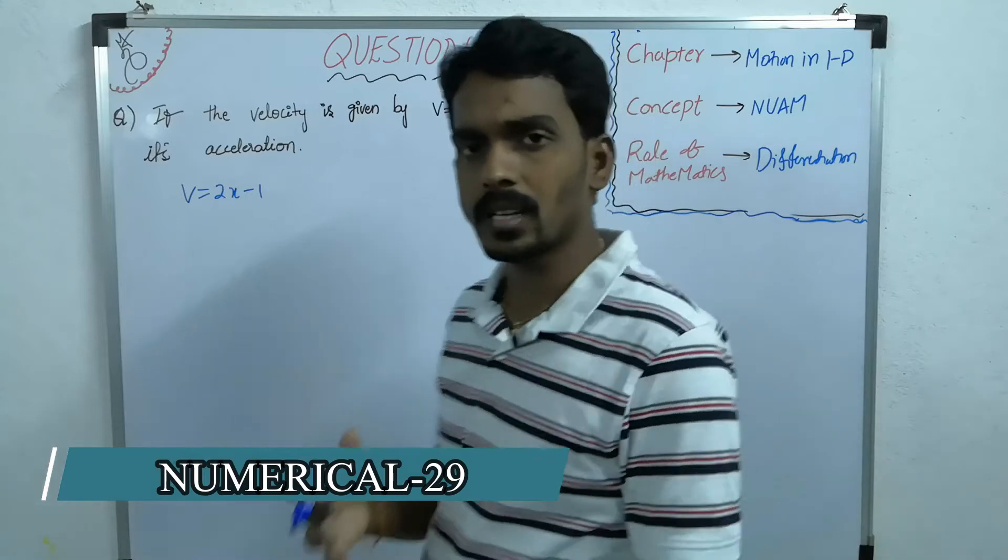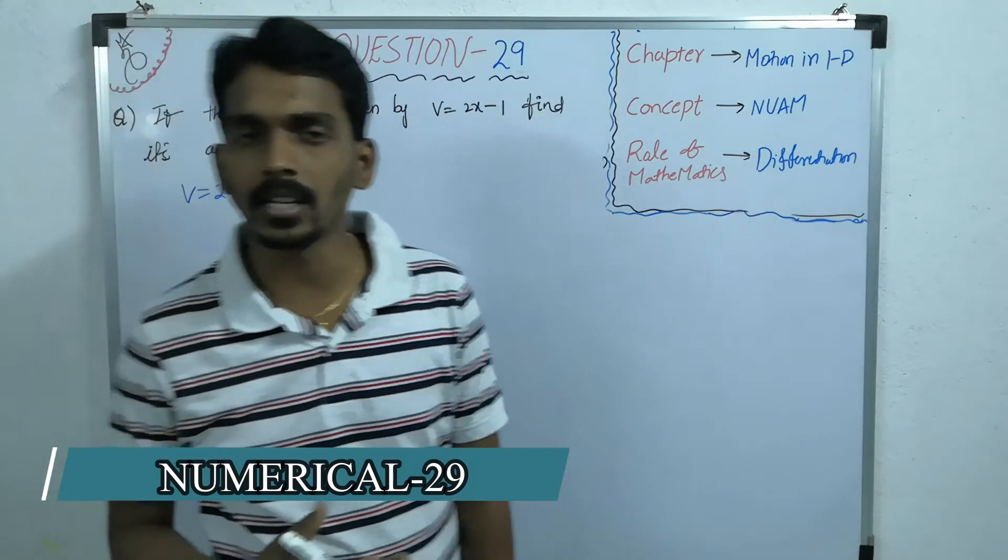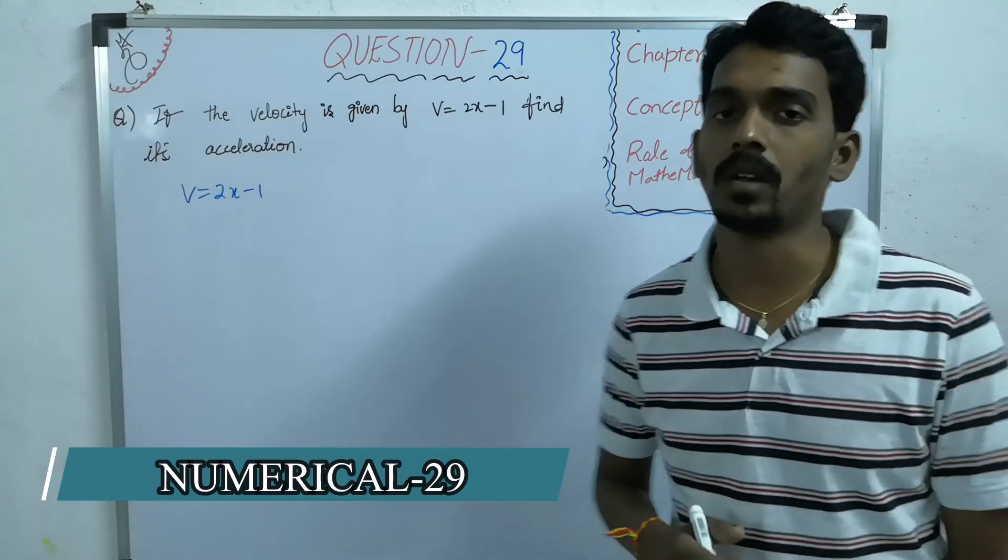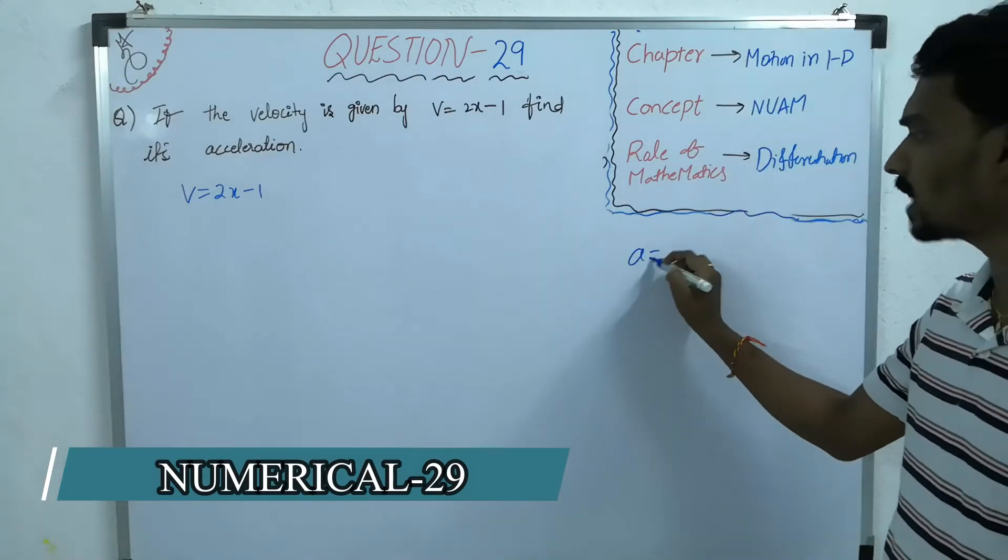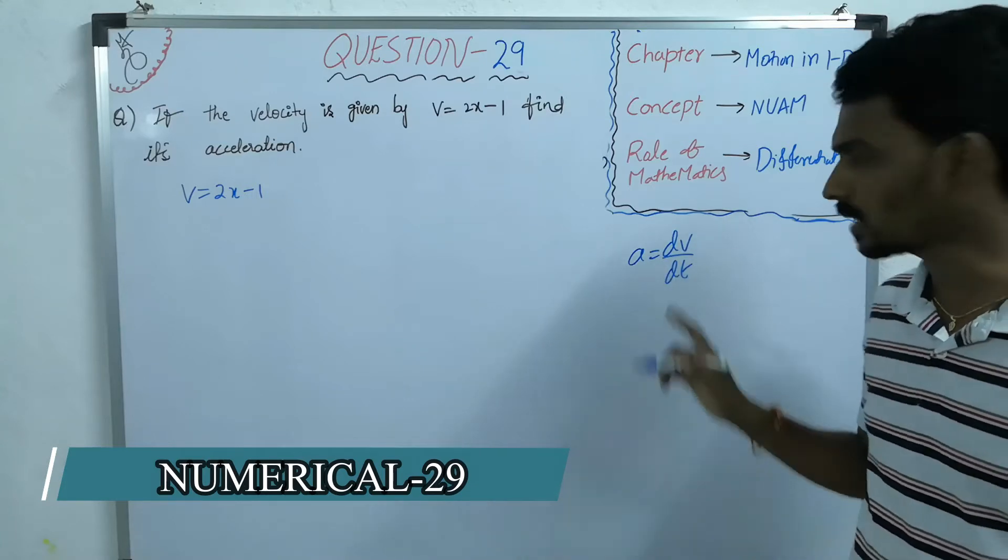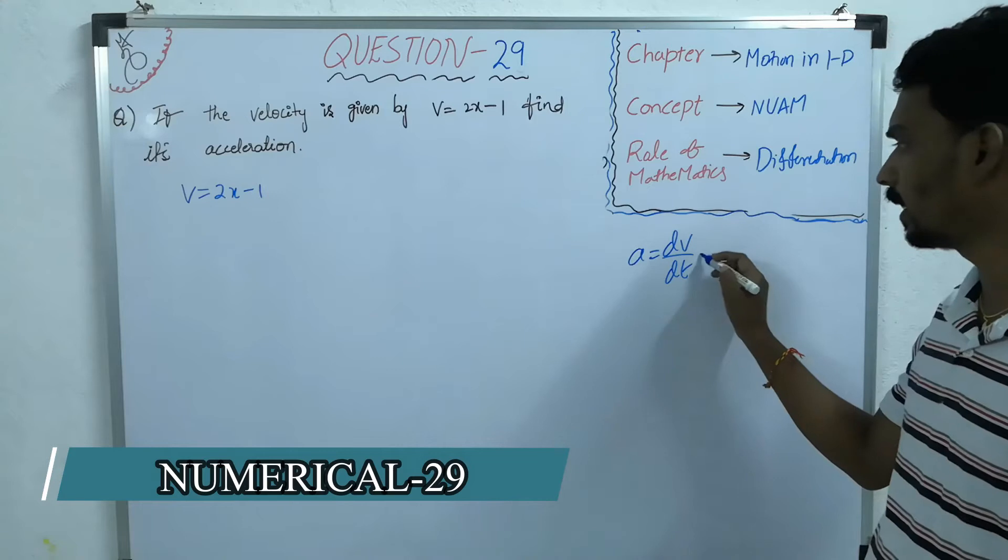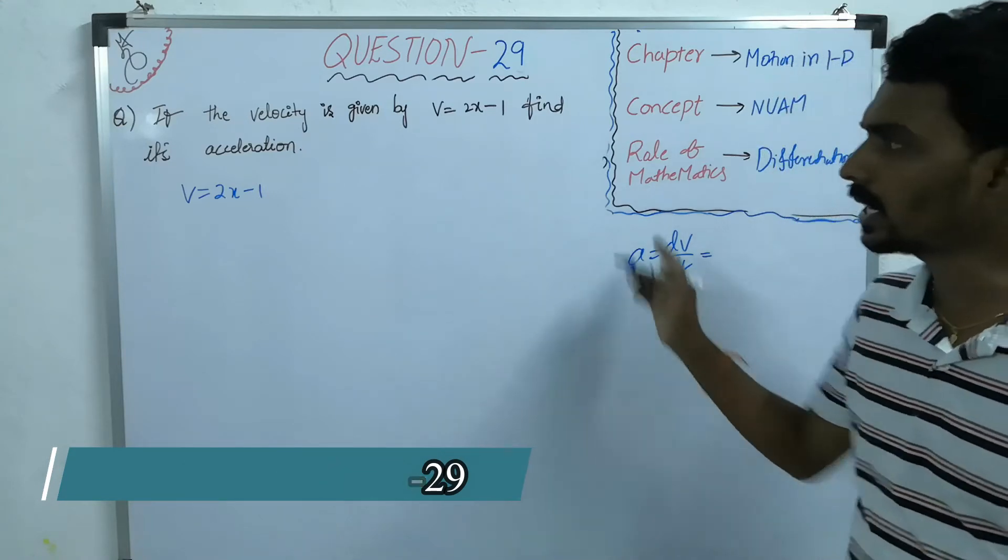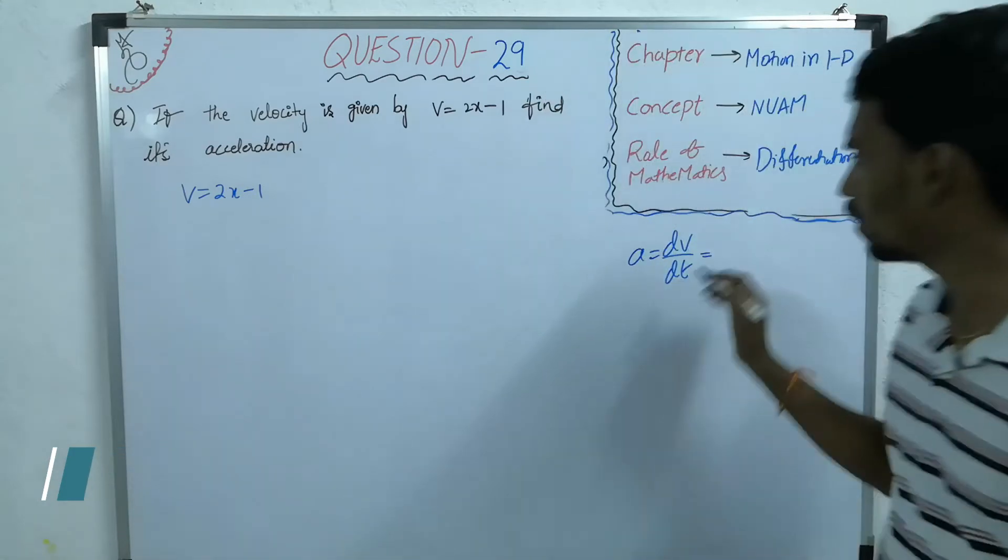Many times the questions will be asking in the entrance point of view about the manipulation of formula. What is the acceleration? dv by dt. But you have to go for differentiation with respect to time. But here it is function of x. Then what you have to do?